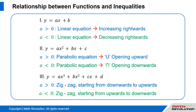Case 3: y equals a times x cubed plus b times x squared plus c times x plus d. When a is positive (a is greater than 0), the equation will result in a zigzag starting from downwards to upwards.